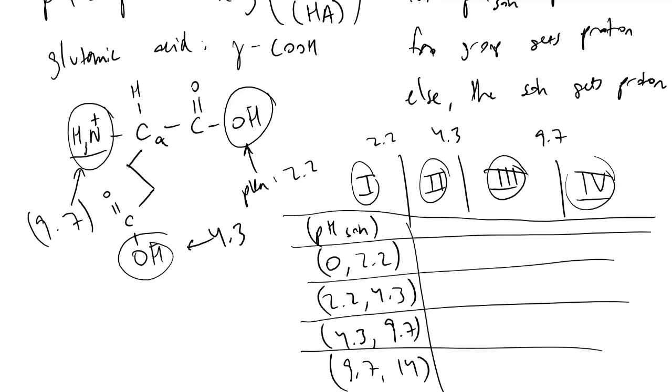Consequently, we will get a charge of 0 plus 0 plus 1. So the overall charge of this molecule will be +1 when the pH of our solution is between 0 and 2.2.